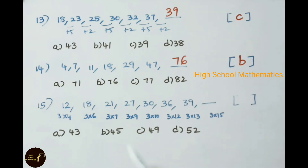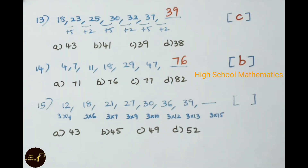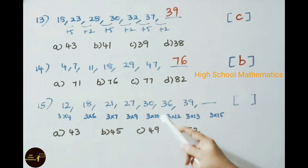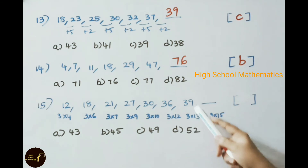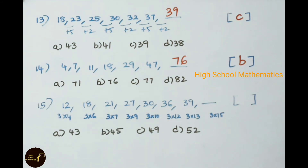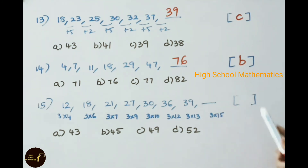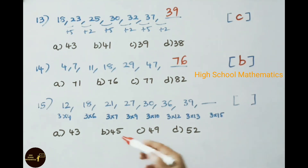Fifteenth practice problem: 12, 18, 21, 27, 30, 36, 39 — find the next term. The terms are multiples of 3: 3 times 4, 3 times 6, 3 times 7, 3 times 9, 3 times 10, 3 times 12, 3 times 13. The multipliers alternate between consecutive and alternative numbers. The next multiplier is 15, so 3 times 15 is 45. The answer is option B, 45.